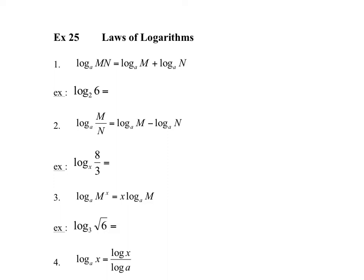Welcome students to exercise 25 on laws of logarithms — looking at the different properties we can have with logarithms, since their operations can be a little different than what we're used to. The first law: for a logarithm base a of a product m times n, we can break that down into log base a of m plus log base a of n. This is called the product rule — a log of a product becomes a sum of logarithms.